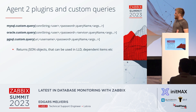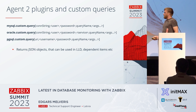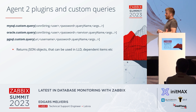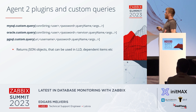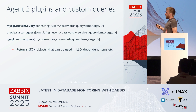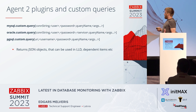With Agent 2 plugins, it used to be a problem that built-in items would return a static amount of metrics, and if you needed other customizations, you couldn't do it. That's solved now. There are custom query options — if you need some other query, just create an item with a custom query, prepare it, and it returns a JSON object. Use it in LLD, use it in dependent items, or however else you need.